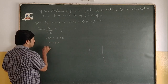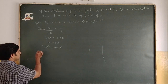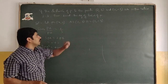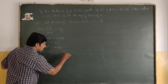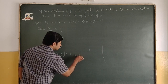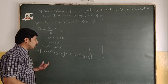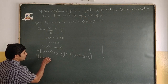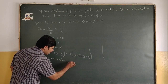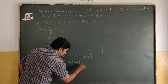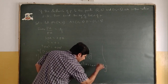Squaring both sides to eliminate the square root: 9·PA² = 4·PB². Substituting: 9[(x-2)² + (y-3)²] = 4[(x-2)² + (y+3)²]. Expanding: 9[x²-4x+4 + y²-6y+9] = 4[x²-4x+4 + y²+6y+9].